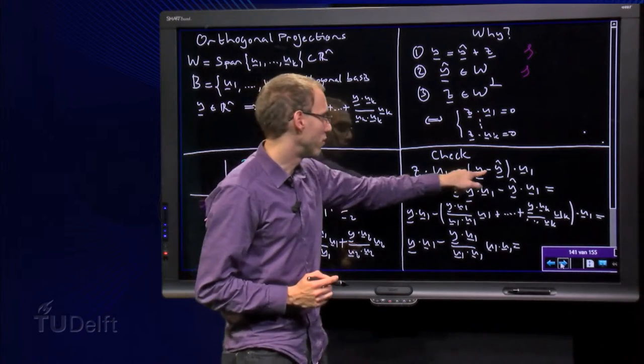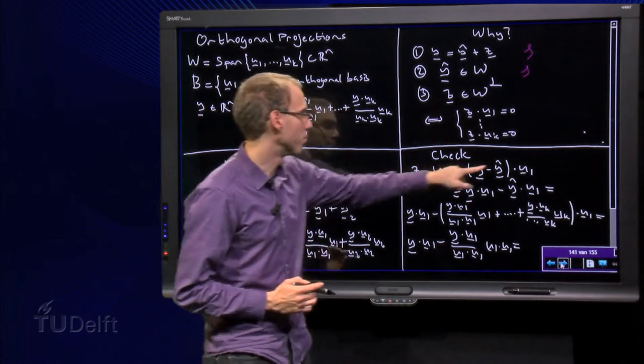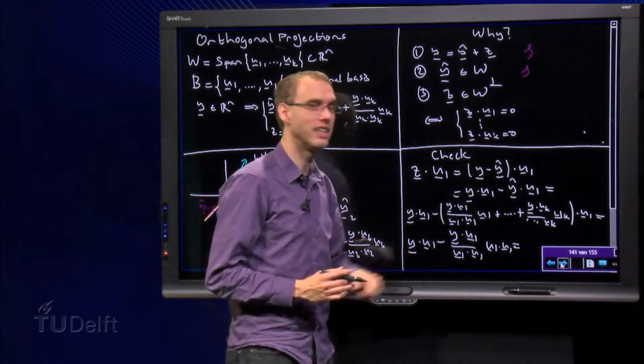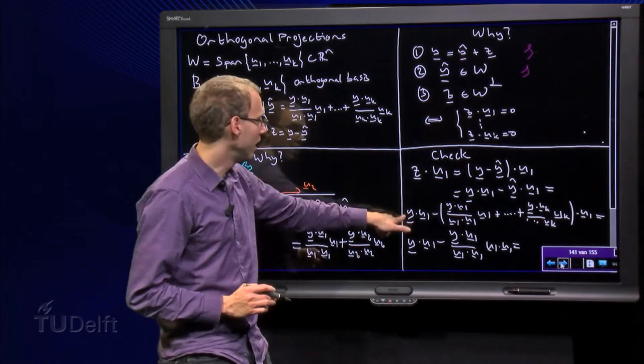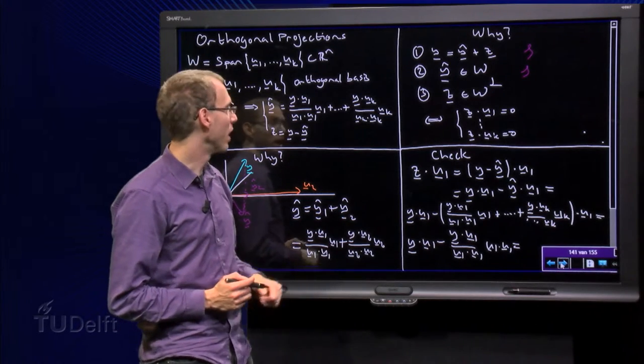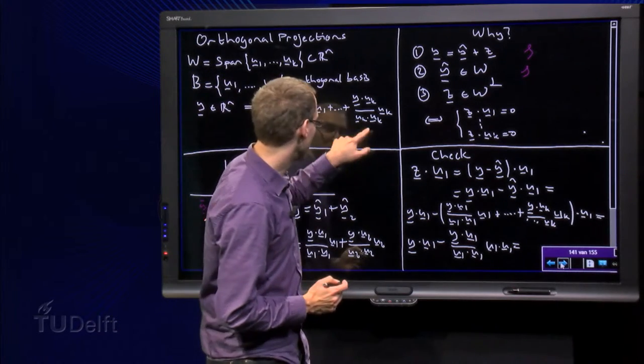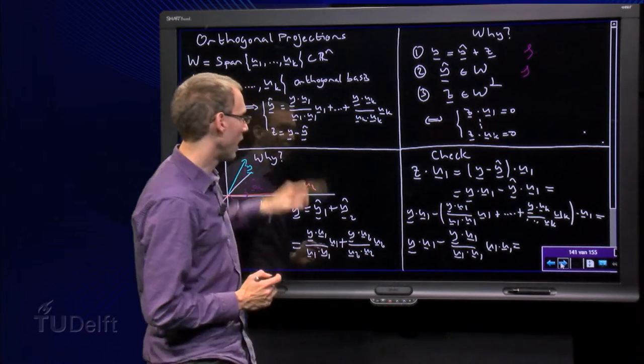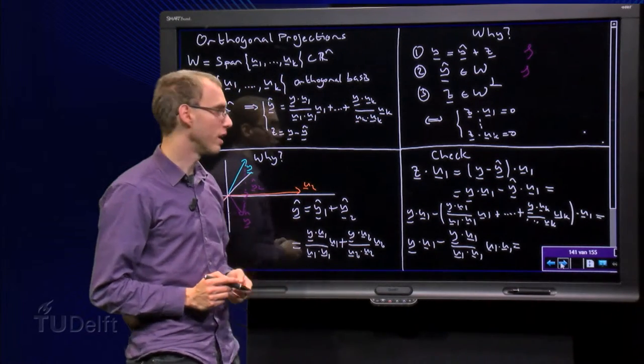Well, we have z equals y minus y-hat. Take the inner product with u1, we get y inner product u1 minus y-hat inner product u1. We leave the y inner product u1 where it is, and we have to substitute this big formula for y-hat. And then we compute all the inner products.